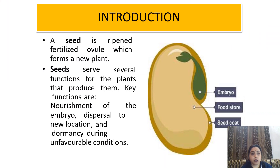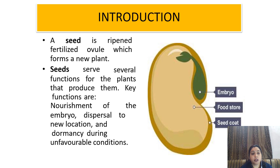Artificial seed. Before knowing what artificial seeds are, we should know what a seed is. A seed is a ripened, fertilized ovule which forms a new plant or reproduces a new plant. Seeds serve several functions for the plants like nourishment of the embryo, dispersal to new locations, and dormancy during unfavorable conditions.